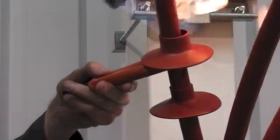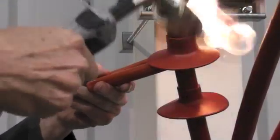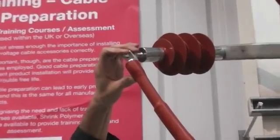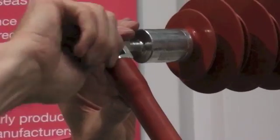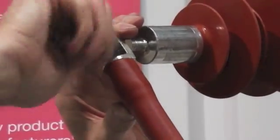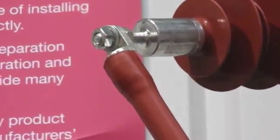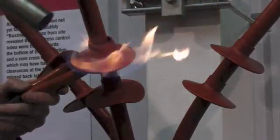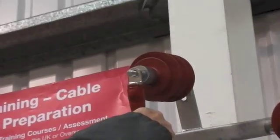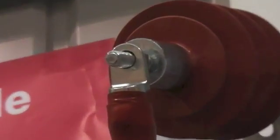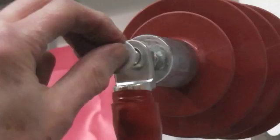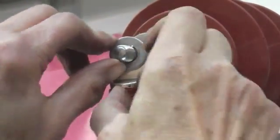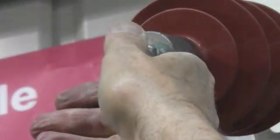Another problem area with outdoor terminations is the use of PVC tape to phase identify the cores. PVC tape will track and degrade. Moisture will get underneath, causing discharging, and eventual failure is likely. If you use PVC tape, remember to remove it once the cores are in their final destination.